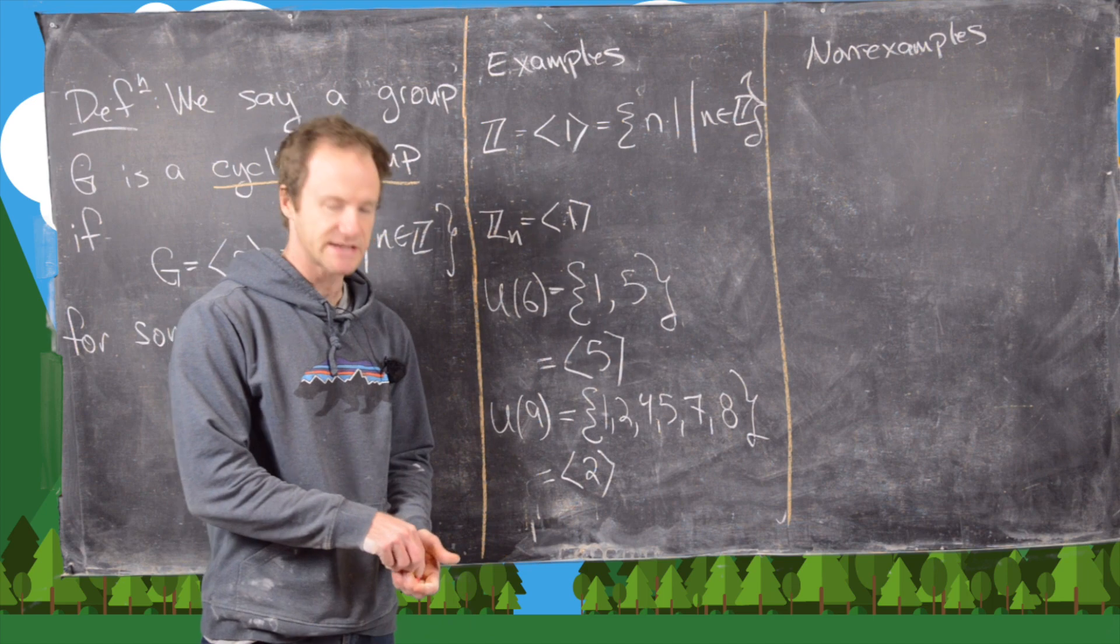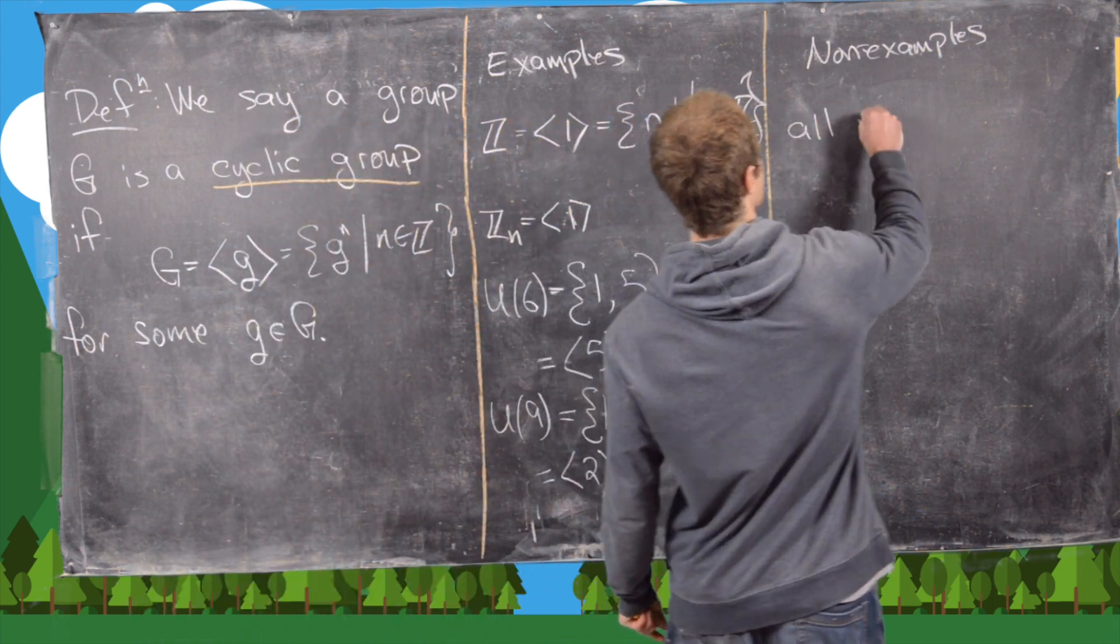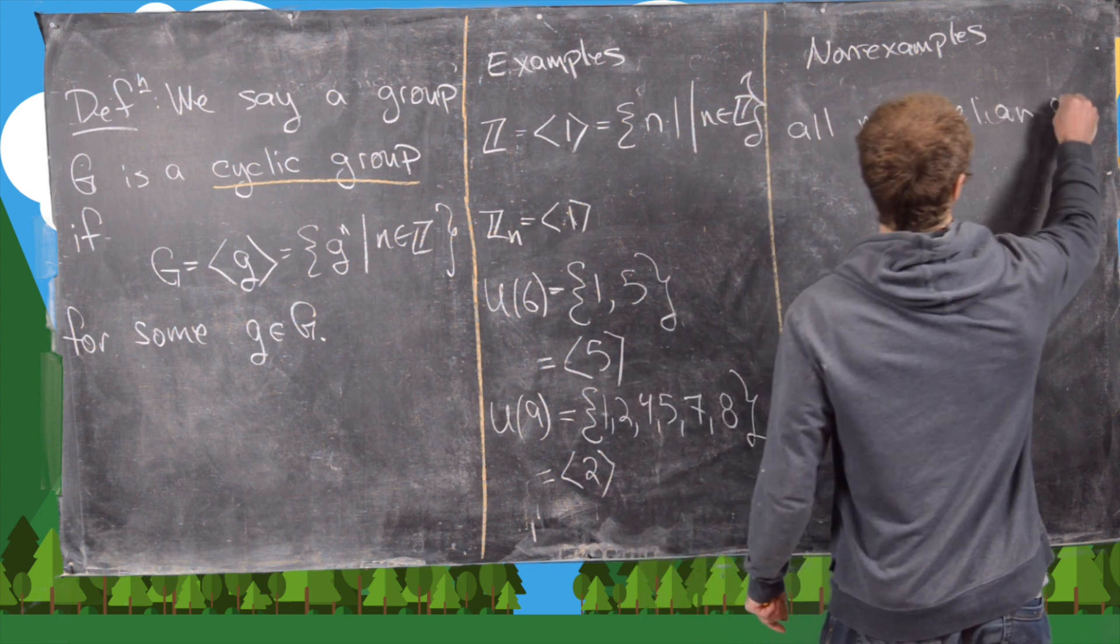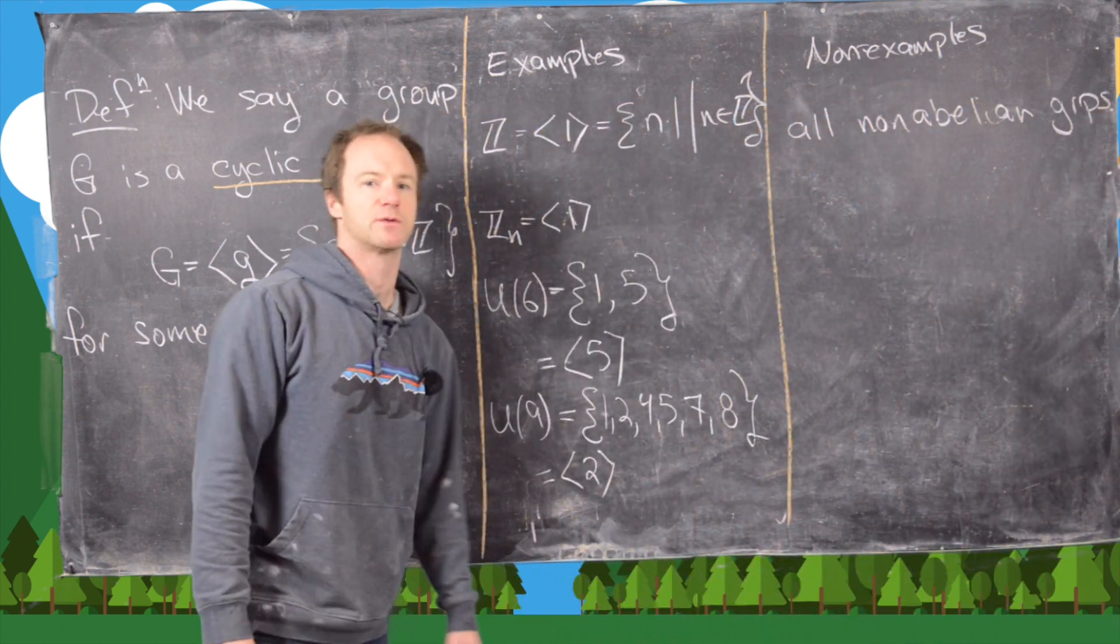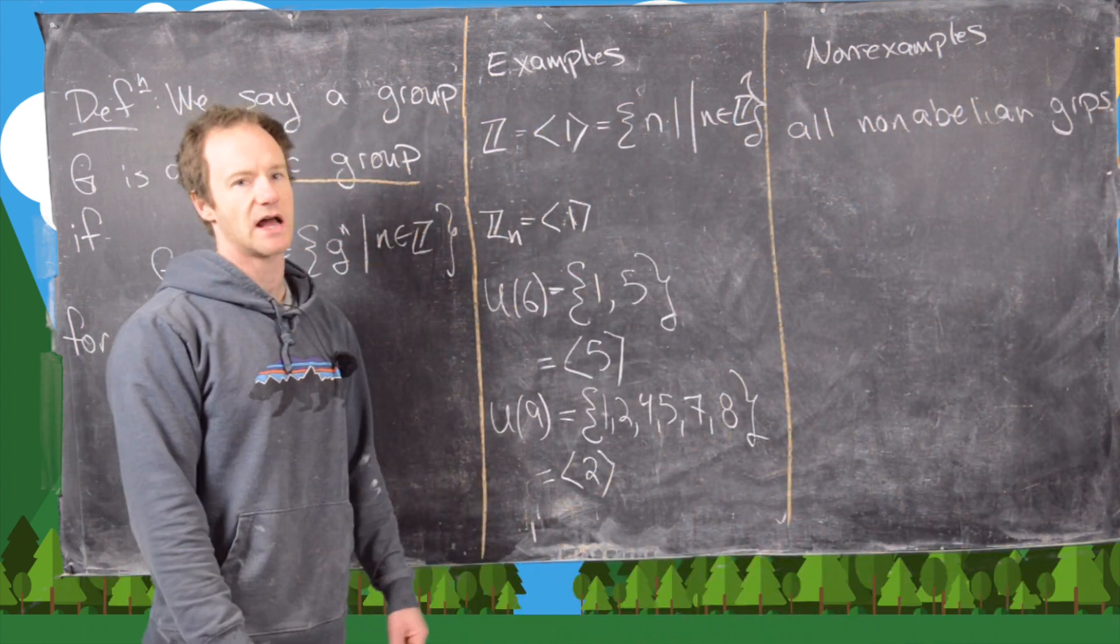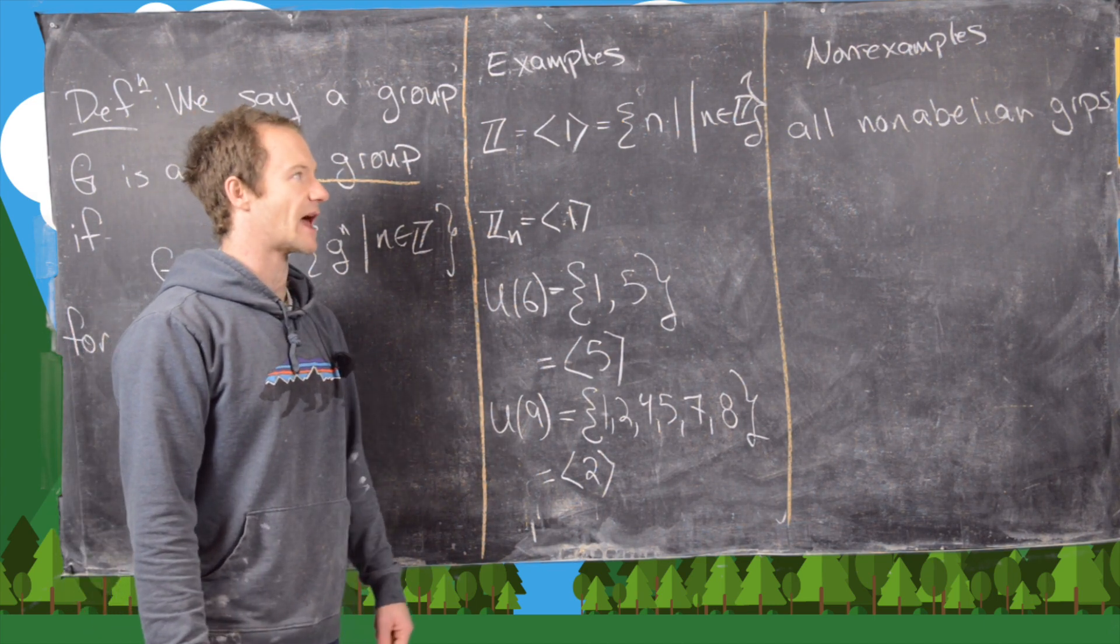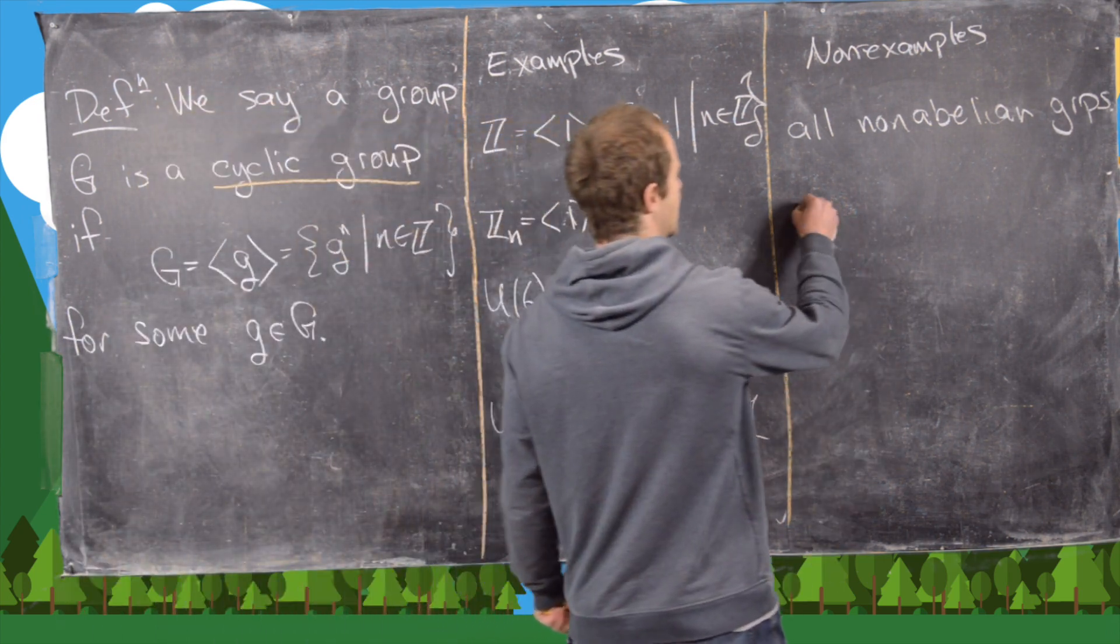Let's look at some non-examples. We actually get a bunch of non-examples for free, and that's all non-abelian groups. That's because we just proved that all cyclic groups were abelian, so that means all non-abelian groups are not cyclic. Maybe it would be interesting to look at some non-examples that are abelian just for interest.